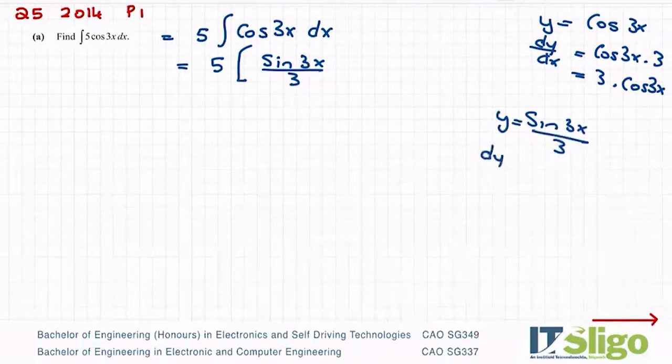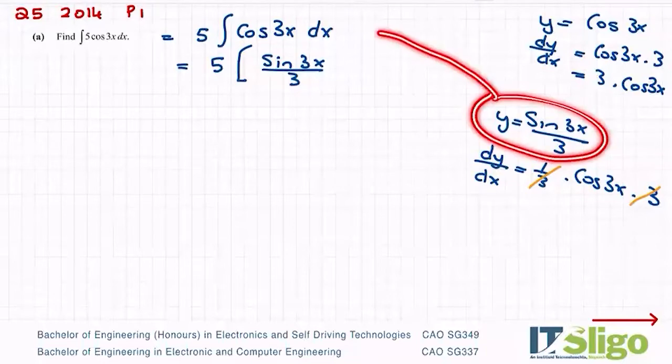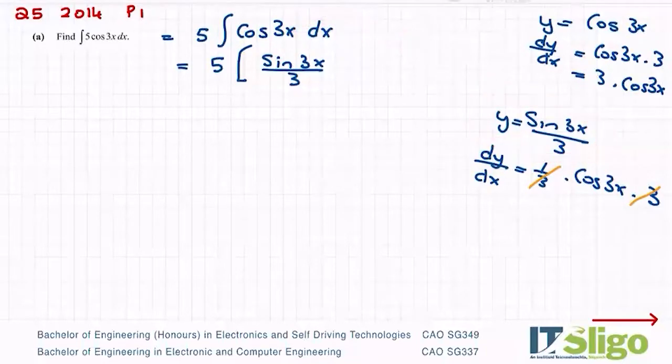And as such, if I differentiate this one, I will get a third, which is that constant on the bottom, by cos 3x, and of course I have to multiply by the a. And the third and the three cancel. And you can see you get back to cos 3x. So you can always check your integration by going backwards and seeing can you get back to what you started with, because these are the opposite of each other.